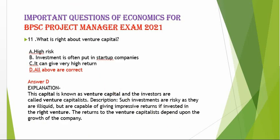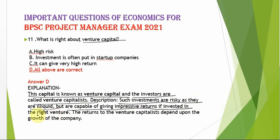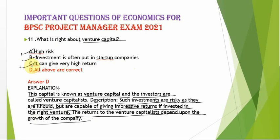What is right about venture capital? Venture capital is a type of capital where investors, called venture capitalists, invest in risky but high-potential ventures. Such investments are illiquid but capable of giving impressive returns. Options: high risk (correct); investments often put in start-up companies (correct); it can give very high returns (correct). All three options are correct, so option D (all above) is the answer.